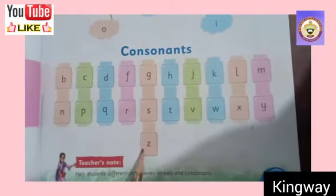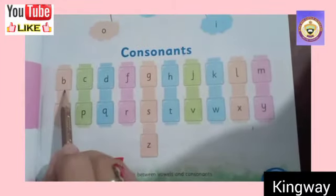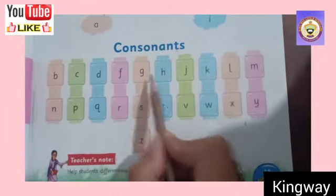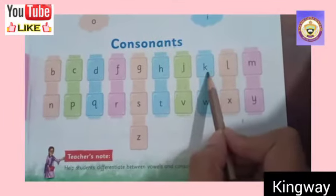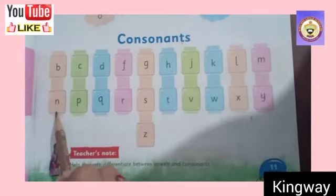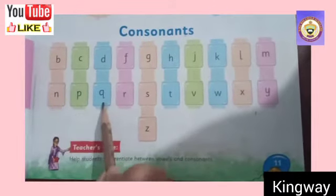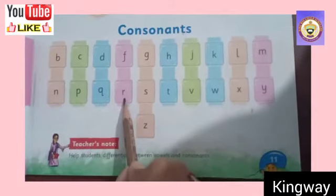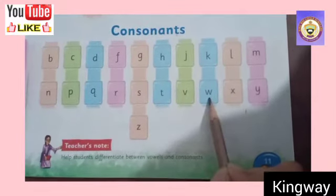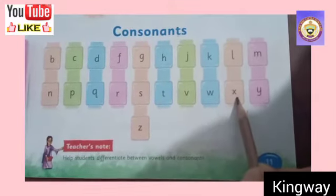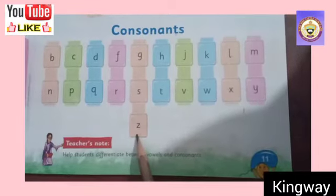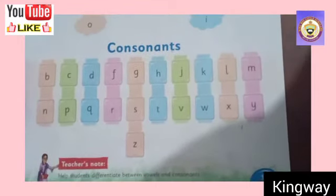I will also read out here. Let's read out: B, C, D, F, G, H, J, K, L, M, N, P, Q, R, S, T, V, W, X, Y, Z. These are the consonants.